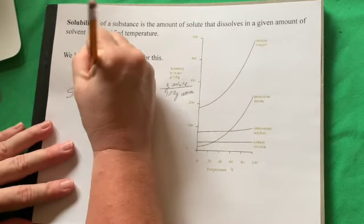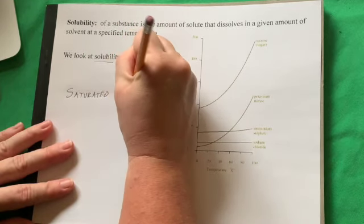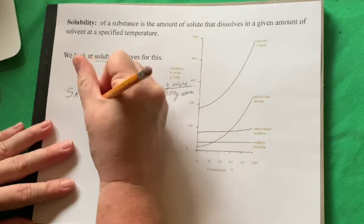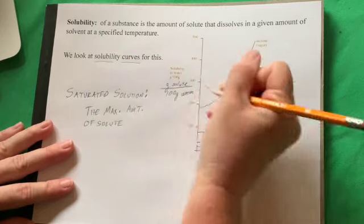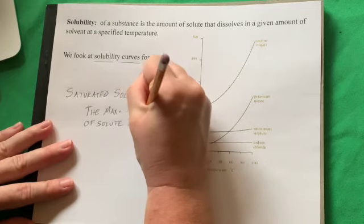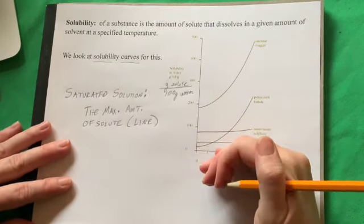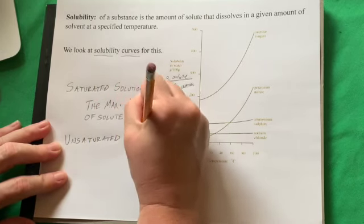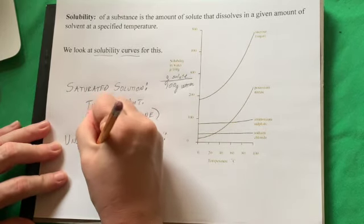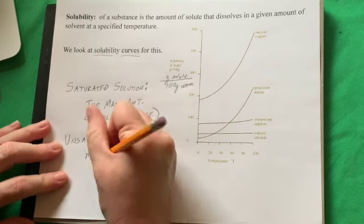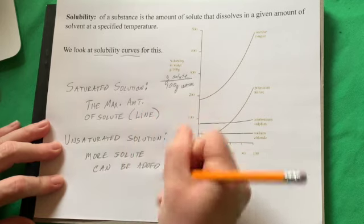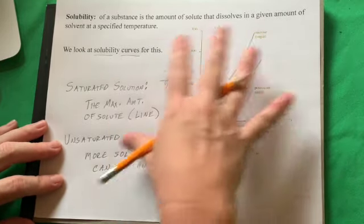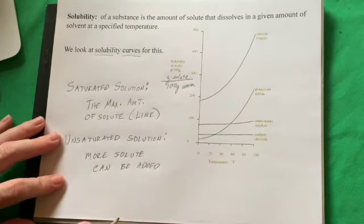All along these lines on the solubility curve, we have what is called a saturated solution — that is the maximum amount of solute that will dissolve in that amount of solvent. If you are below the line, you are unsaturated, which means more solute can be added. On the line you are saturated; below the line you are unsaturated. We'll do work on interpreting that graph in class.